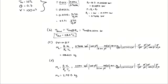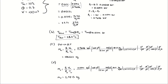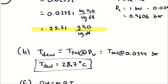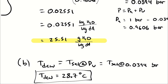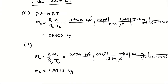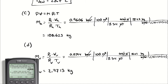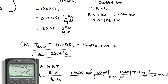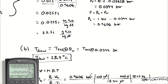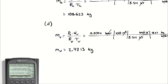The other way is to use the humidity ratio proportion: there are 0.02551 kilograms of water per kilogram of dry air, and we have 108.623 kilograms of dry air. So 108.623 multiplied by 0.02551 gives 2.771 — the same mass. Interesting.